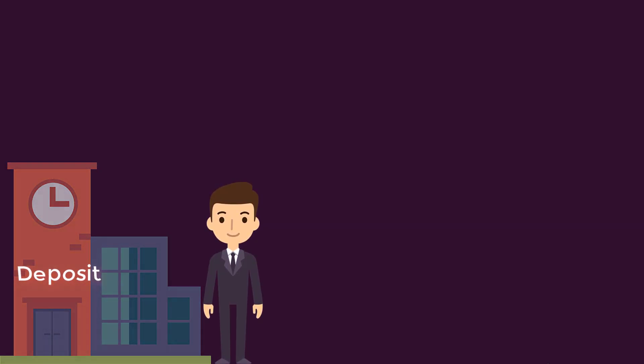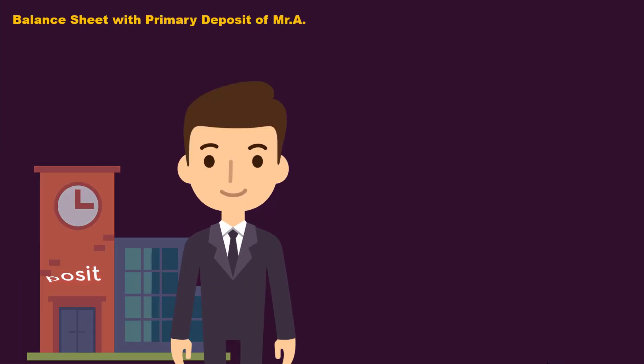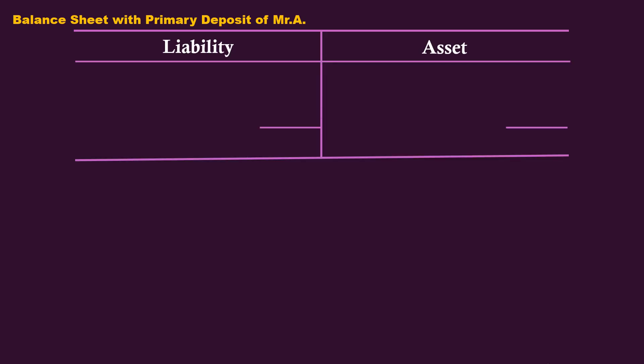After this, the relevant transaction in the balance sheet of the bank looks like this. The balance sheet consists of two sides: liability and asset. The deposit of 1000 rupees is entered on the liability side because the bank has to repay it to the customer. It is shown as cash on the asset side because the bank is going to earn interest income by lending the money.